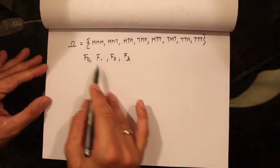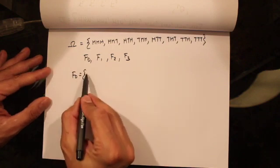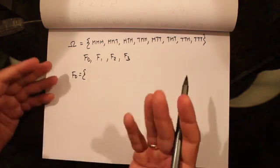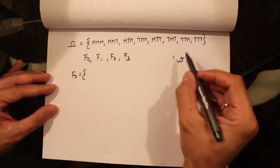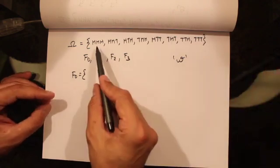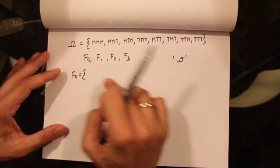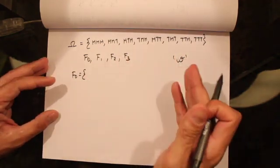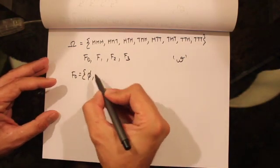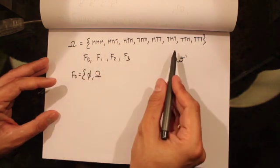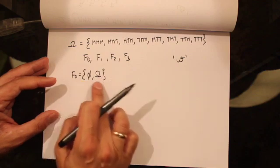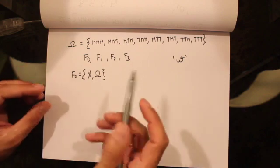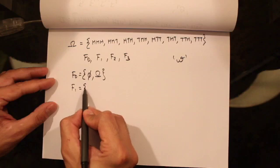We're going to construct these sigma algebras by putting in all those sets which are resolved by the information available to us. Without tossing any coin, we know that the outcome omega will be one of the eight possible outcomes, but we cannot say which one will be realized. The only thing we can say is that omega will definitely not be part of the empty set and will definitely be part of our sample space.